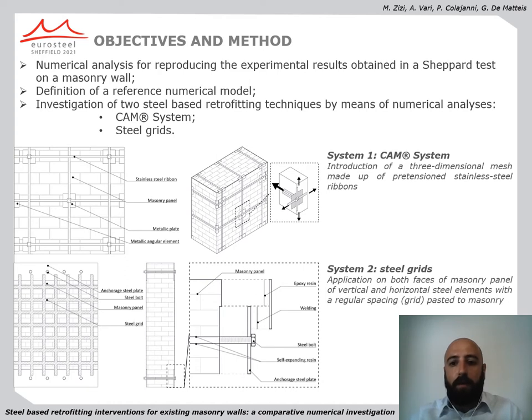In particular, these two systems consist of the introduction of a three-dimensional mesh made up of pretensioned stainless steel ribbons, while the steel grids consist of the application on both faces of a masonry panel of vertical and horizontal steel elements.